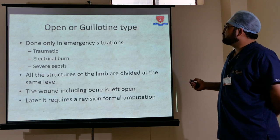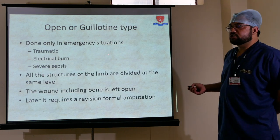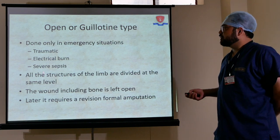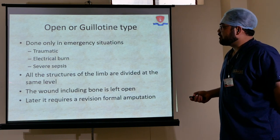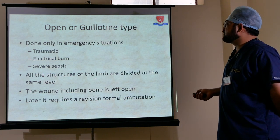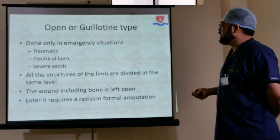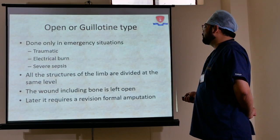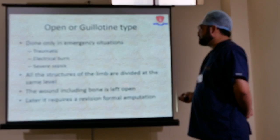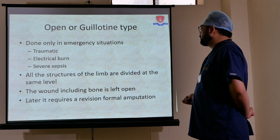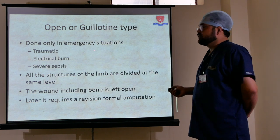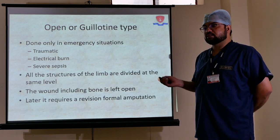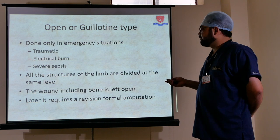The open or guillotine type is done only in emergency situations such as trauma, electrical burns, or severe sepsis. All structures of the limb are divided at the same level, and the wound including bone is left open. It later requires revision formal amputation — it is essentially a simple chop of the limb.